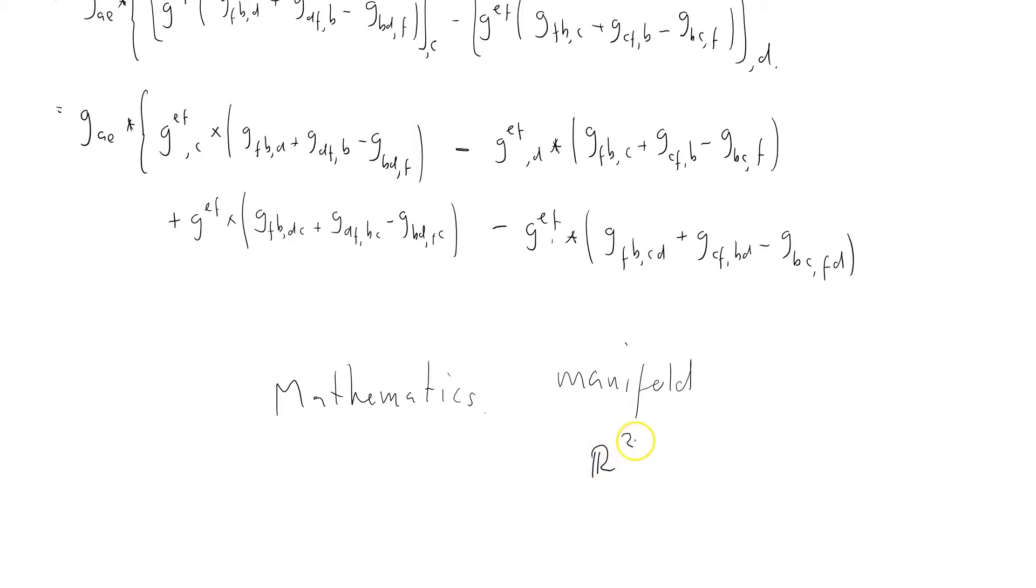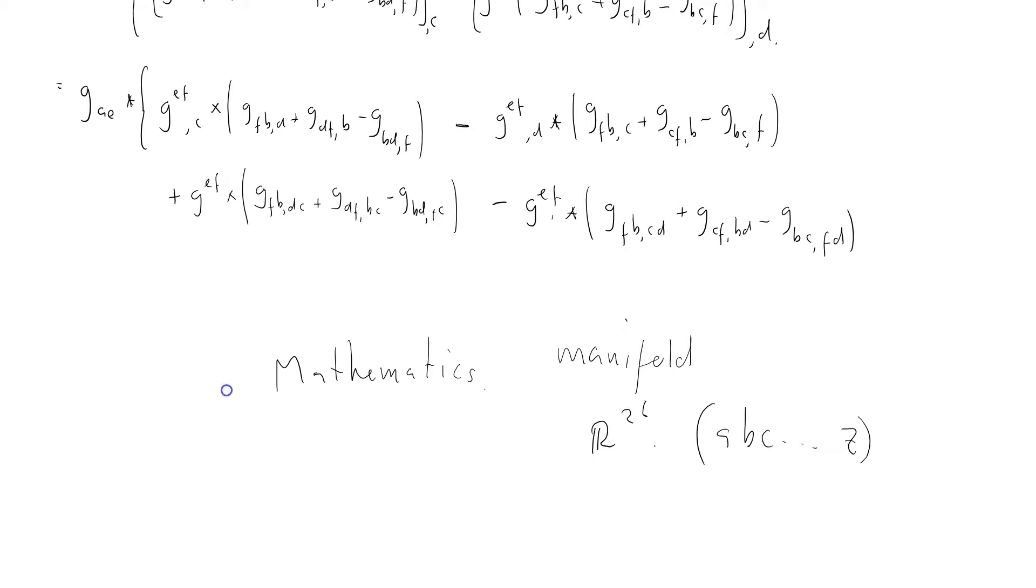You might be working in R to the power 26, and you can call them a, b, c up to z - 26 real numbers that correspond to some point in some abstract space. The mathematics we've been talking about in terms of curvature tensors works perfectly well for this kind of non-physical system.